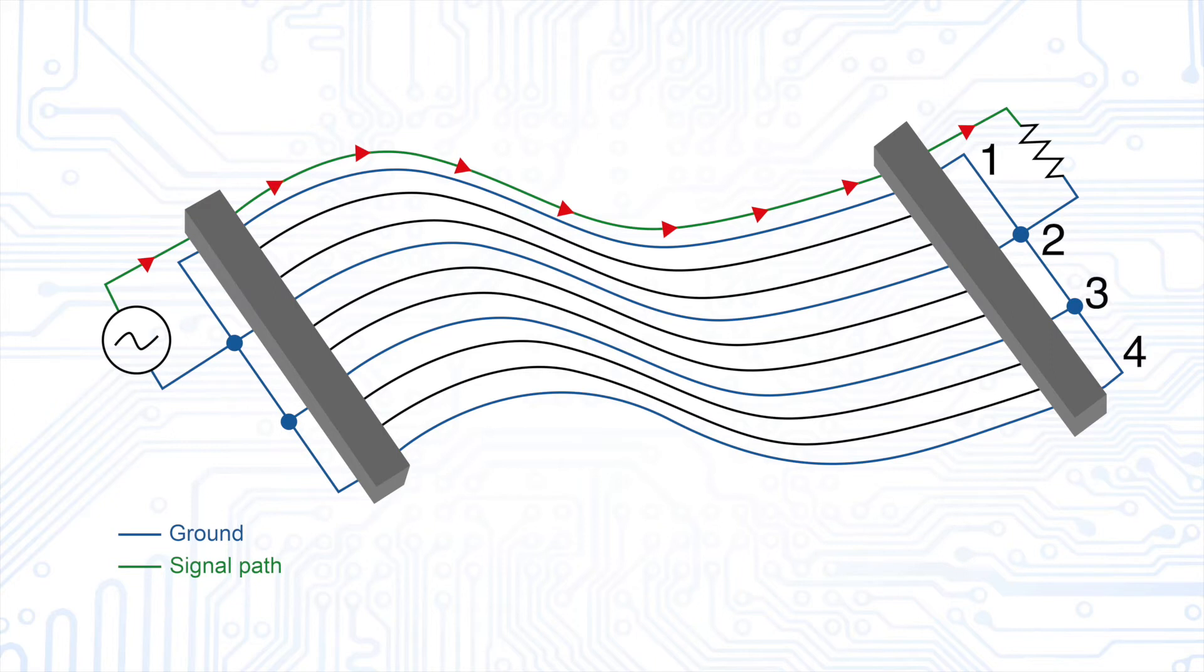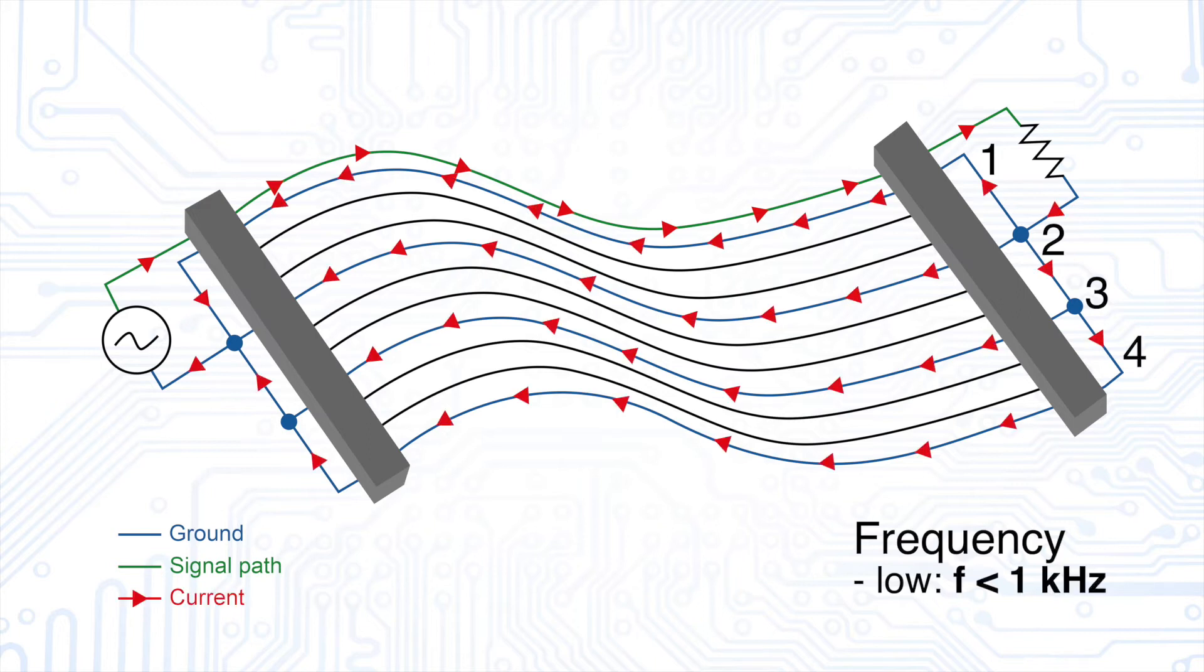The answer depends on the frequency. At low frequencies, frequencies below 1 kHz, the return current is divided almost equally between all four lines. At high frequencies, frequencies higher than 10 kHz, the return current flows mainly along line 1.